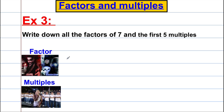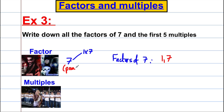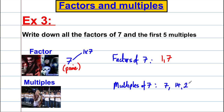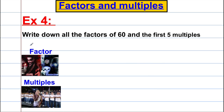Let's do the factors of 7. The only whole numbers that multiply to give 7 are 1×7, so its factors are just 1 and 7. We'll see in another video that this is known as a prime number — a prime number has only two distinct factors. The multiples of 7 are: 7, 14, 21, 28, and 35 for the first five.